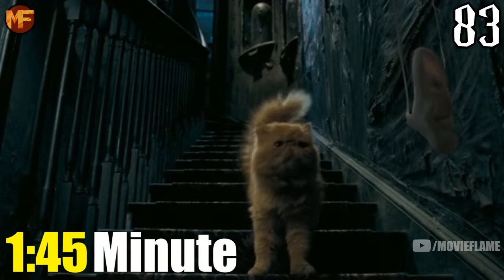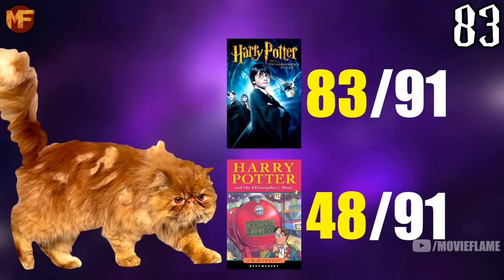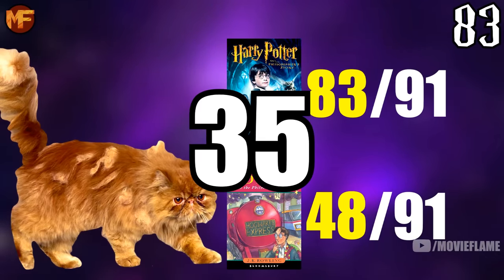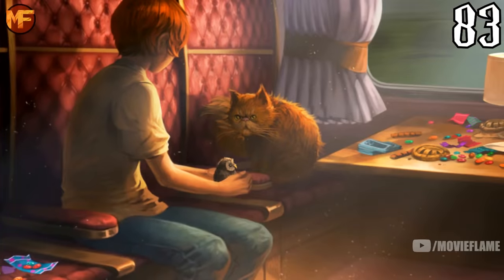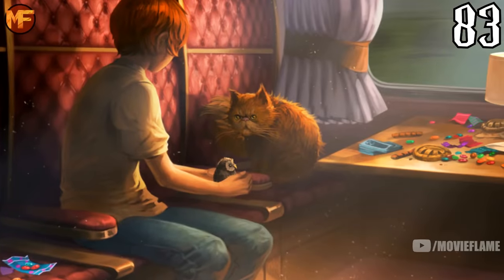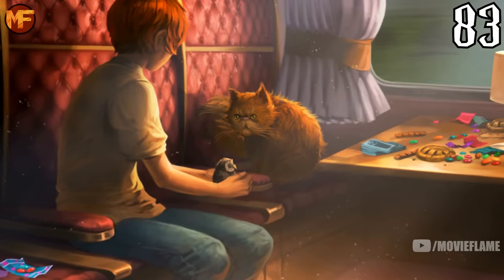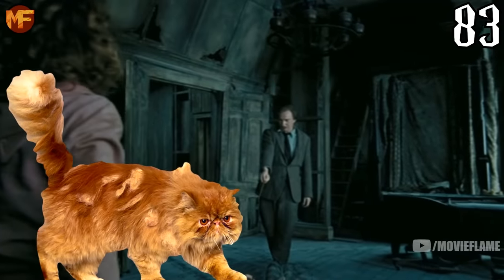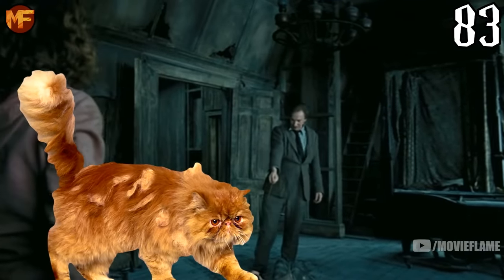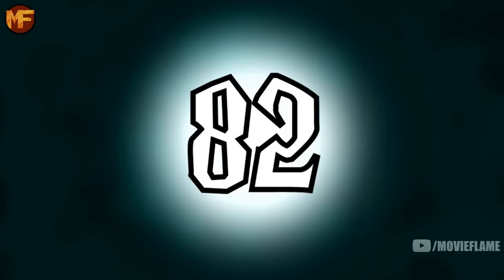Crookshanks' ranking for the novels was number 48 — a 35-spot difference from the films. Looking back, this makes sense because he had whole arcs that were cut for the third film, like him talking and working with Sirius in his dog form and being present for the Shrieking Shack scene. At number 82 we have Angelina Johnson with one minute and 45 seconds of screen time, meanwhile she ranked at number 62 overall for the books — a 20-spot difference. It's wild that Crookshanks has more screen time than Angelina.